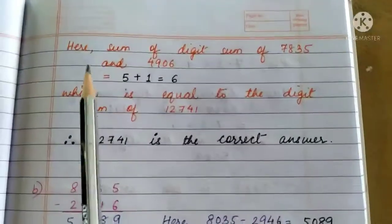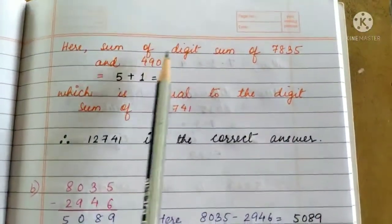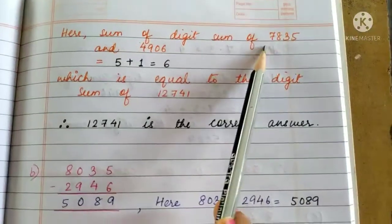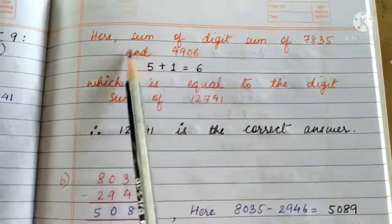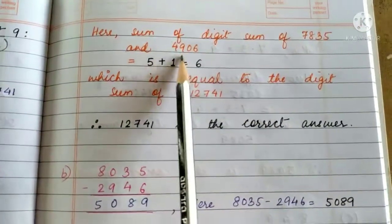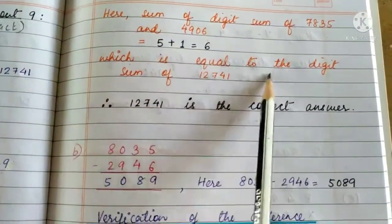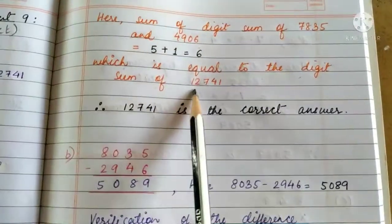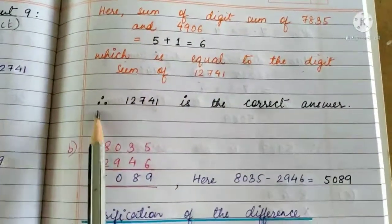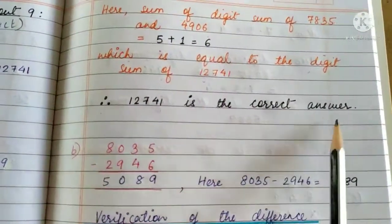So here, the sum of the digit sums of 7835 and 4906 equals 5 + 1 = 6, which is equal to the digit sum of 12741. Therefore, it is the correct answer.